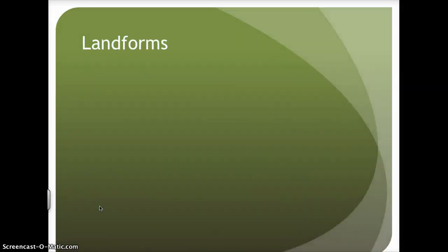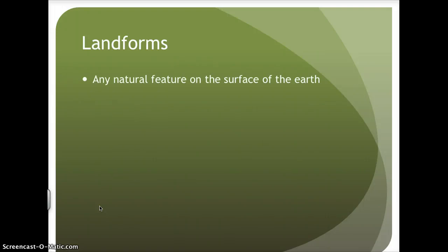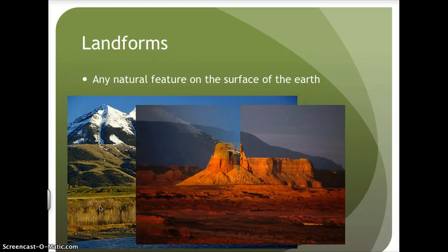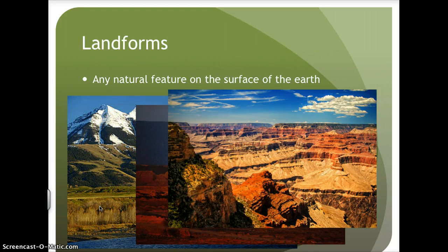Let's take a look at landforms. A landform is any natural feature on the surface of the earth, which could include mountain ranges, desert-like climates, and mesa landforms, as well as large canyons, including the Grand Canyon of the United States.